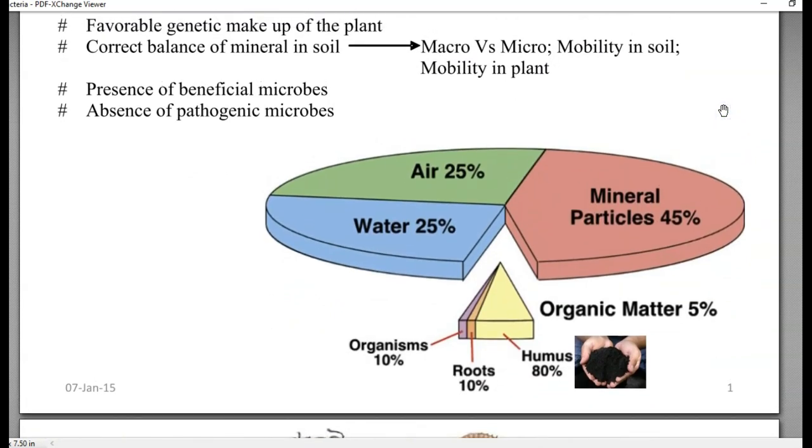If you look into the soil, 25% is covered with air and 25% with water, and 45% constitutes mineral particles. The mineral particle is where mainly inorganic nutrients will be present, or the inorganic micro and macroelements. The remaining small portion of 5% goes to organic matter.